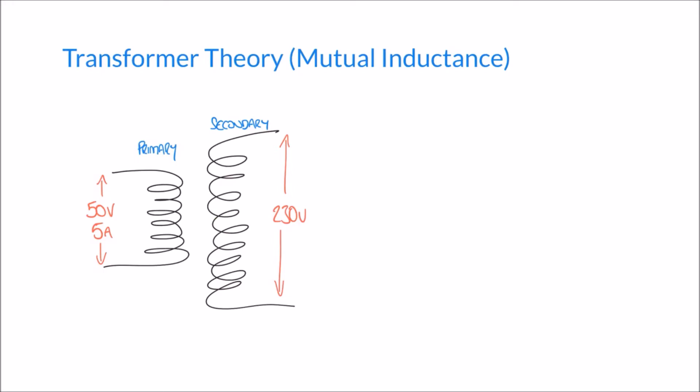This relationship is governed by the number of turns. If the secondary has more turns than the primary, a greater voltage will be induced on the secondary than was supplied to the primary. Conversely, fewer turns on the secondary means a smaller voltage is induced. In our example, the secondary has more turns than the primary — this is a step-up transformer, stepping the voltage up so it's higher on the secondary output than on the primary input.